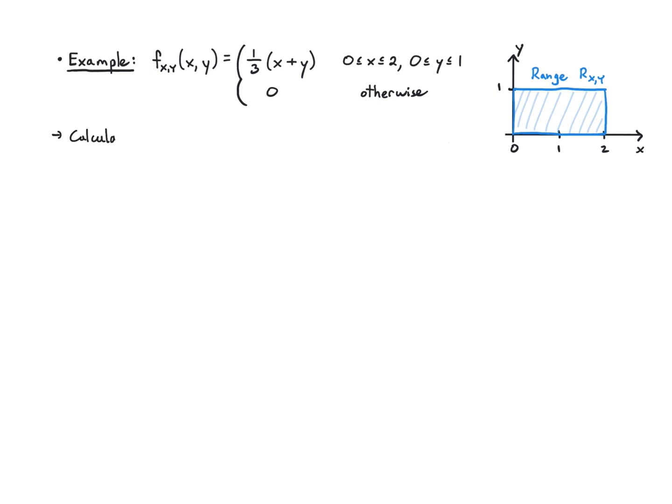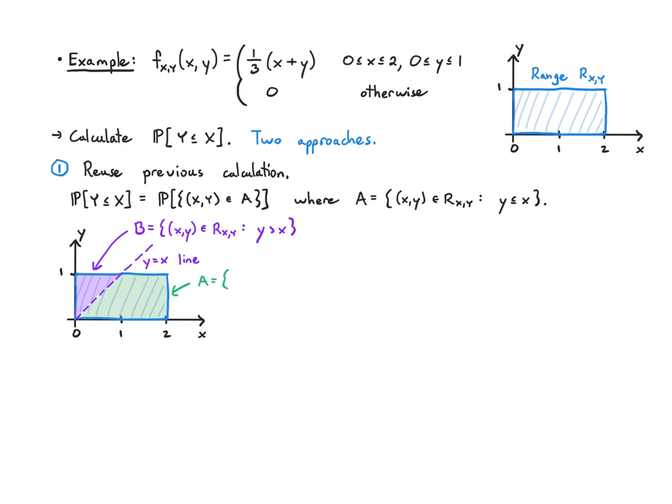Let's keep going. What is the probability that Y is less than or equal to X? We're going to do this in two ways. One way is we can note that we actually basically calculated this before and can reuse this calculation. I'm asking about the probability of belonging to a particular set A. This set A is the pairs (x,y) where Y≤X—that is this green region A here. Notice that the complement of A is equal to B, so we can use the complement property. A is just the thing that we didn't get before.